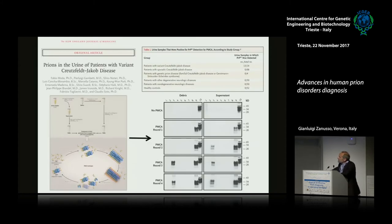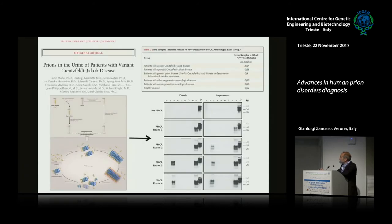Tagliavini and Claudio Soto showed positivity using PMCA in the urine of variant CJD patients. They centrifuge the urine, take the supernatant, perform ultracentrifugation, detect the debris, wash it, take the supernatant after ultracentrifugation, and mix the two products using transgenic mice brain homogenate. Following different cycles of PMCA, they observe positivity in the urine — from both the debris and the supernatant. They obtained a specificity of 100% and a sensitivity of 97% — 13 out of 14. The one negative patient was treated with pentosan polysulfate for more than 100 months, probably an effect of the therapy.